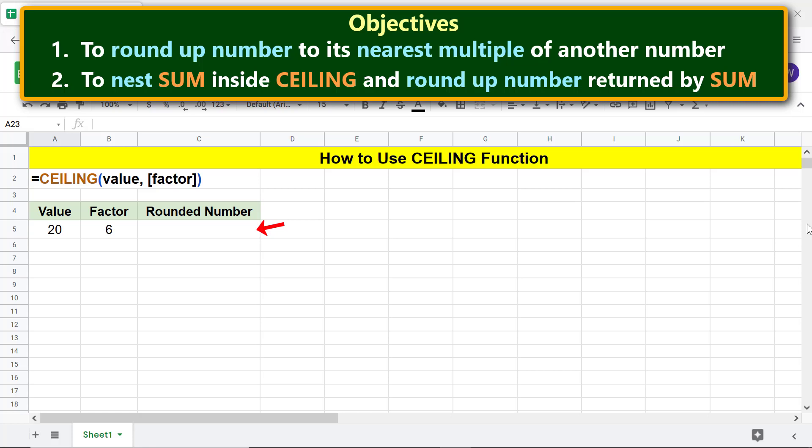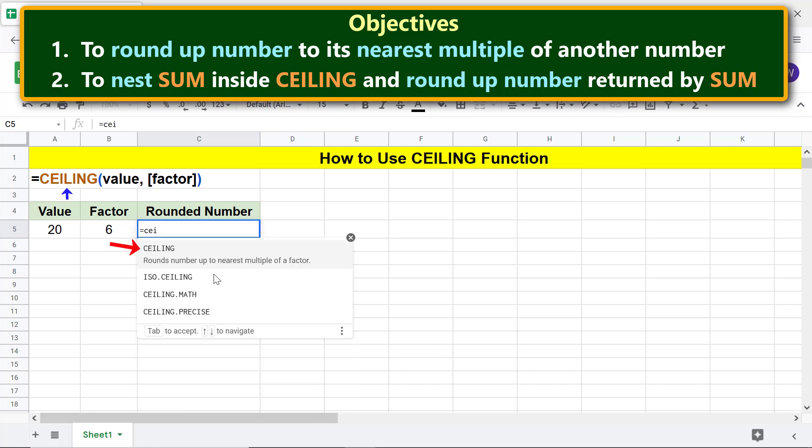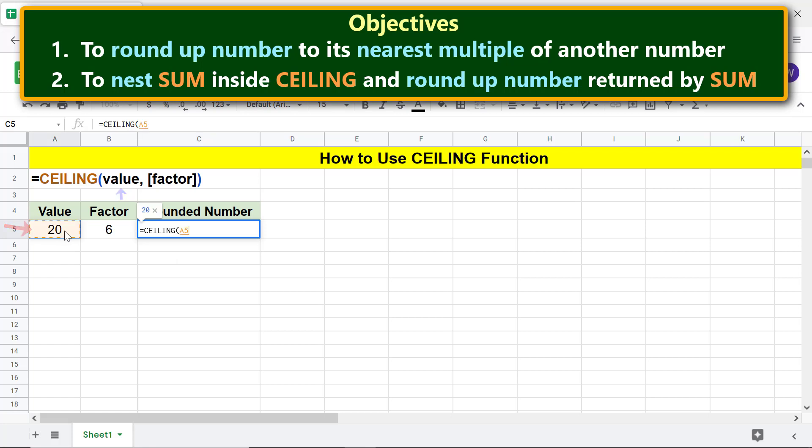Okay, we are ready to type the CEILING function formula for the first objective. First, type equals CEI and select CEILING. For value, click this cell. Type comma. For factor, click this cell. Press enter. There you go! CEILING has rounded up the number.